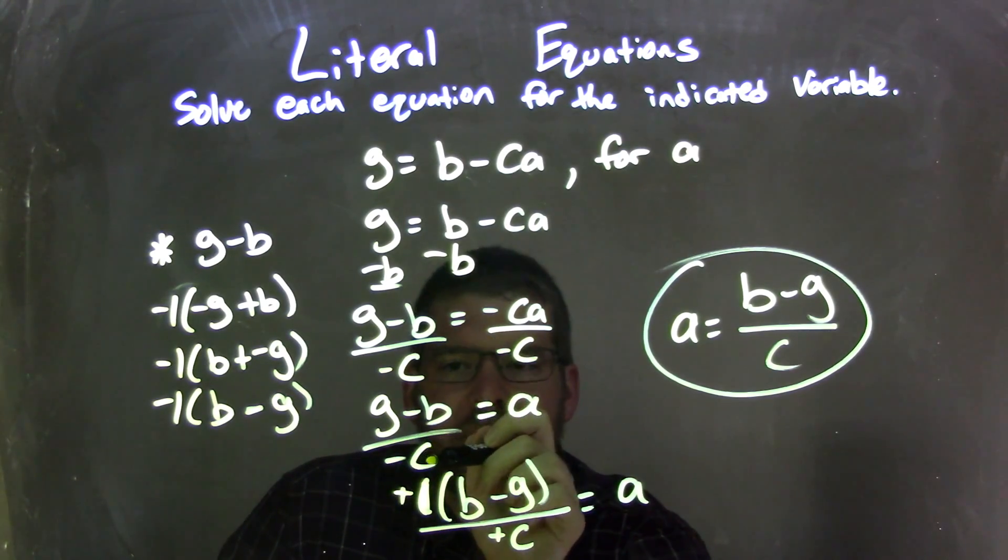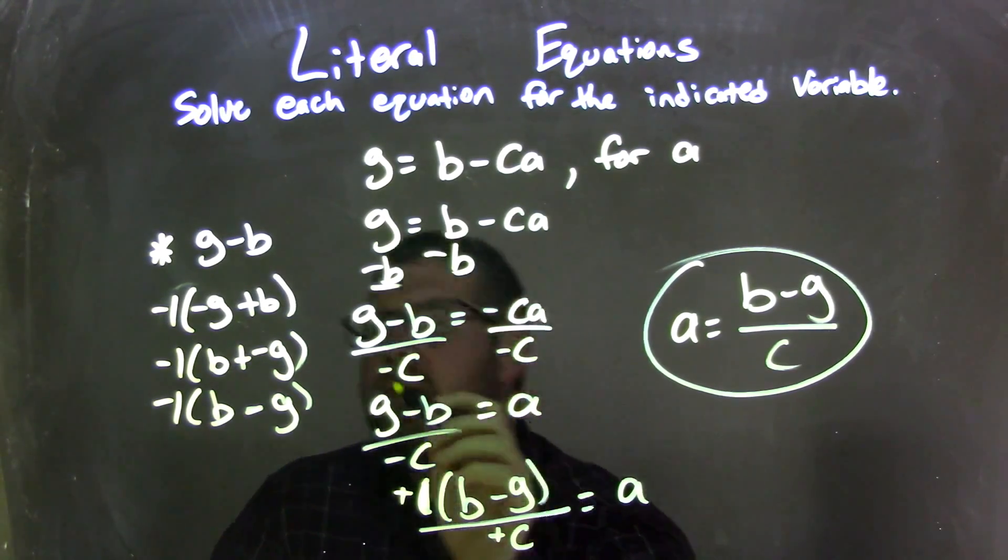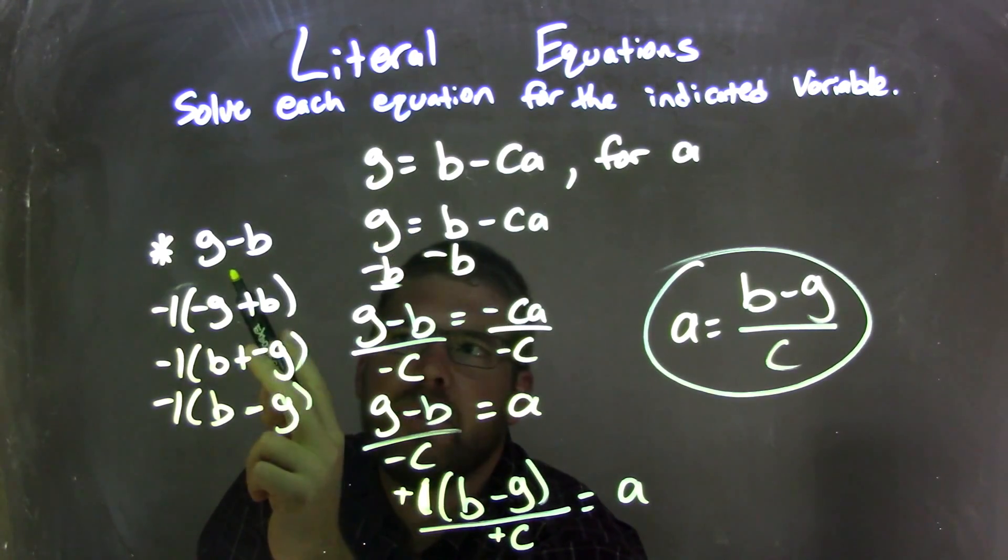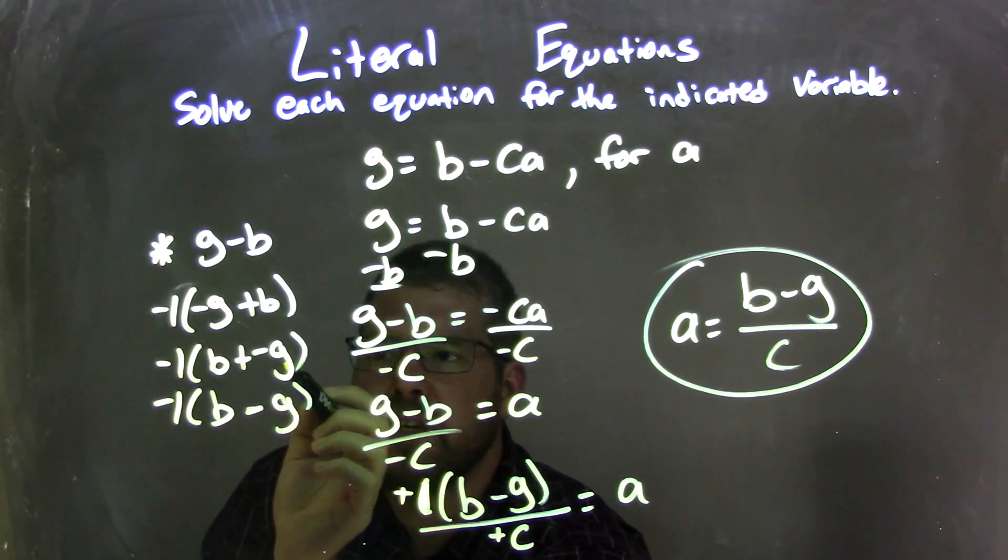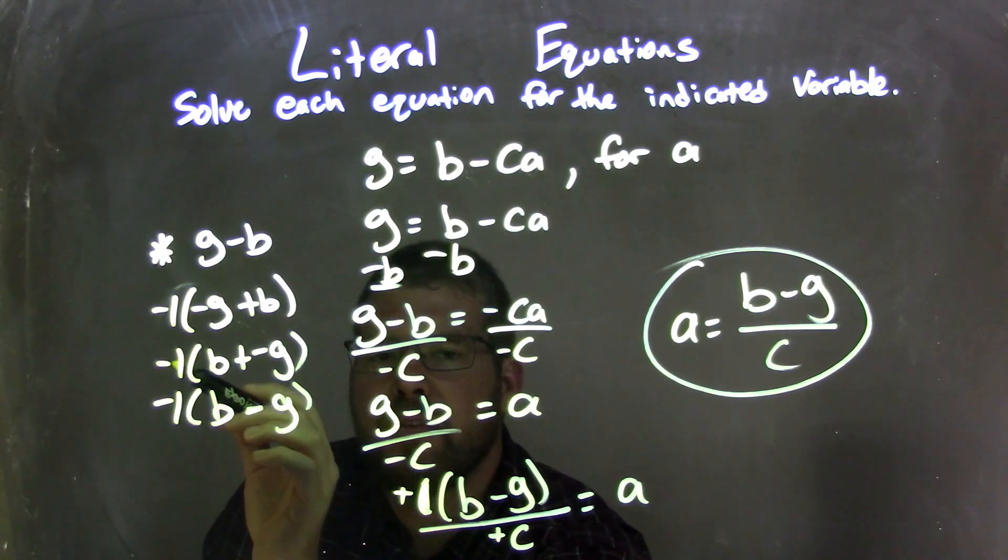From there, I want to eliminate the negative. Now sometimes you can do that all in one step here, but to see really what's going on, G minus B, I can pull out a negative one, giving me negative G plus B. I then use the commutative property, rearranged to be B plus negative G on the inside, and still put the negative one on the outside of the parentheses.